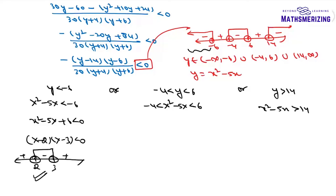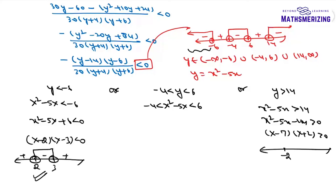Solving Case 3: x² - 5x - 14 > 0, which factors as (x - 7)(x + 2) > 0. Marking -2 and 7 on the number line, sign pattern is plus, minus, plus. I need plus, so either x < -2 or x > 7. Therefore x belongs to (-∞, -2) ∪ (7, ∞).